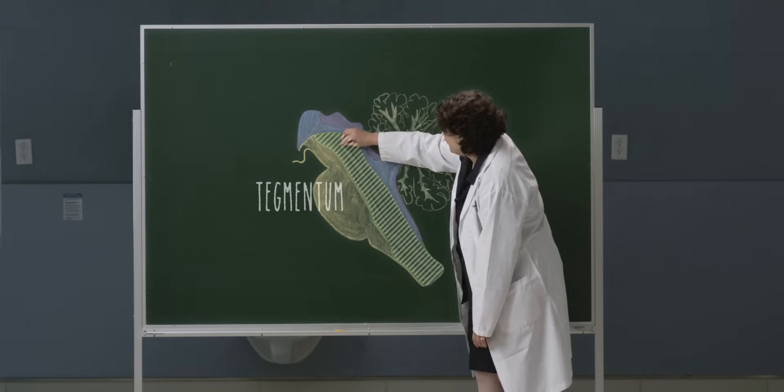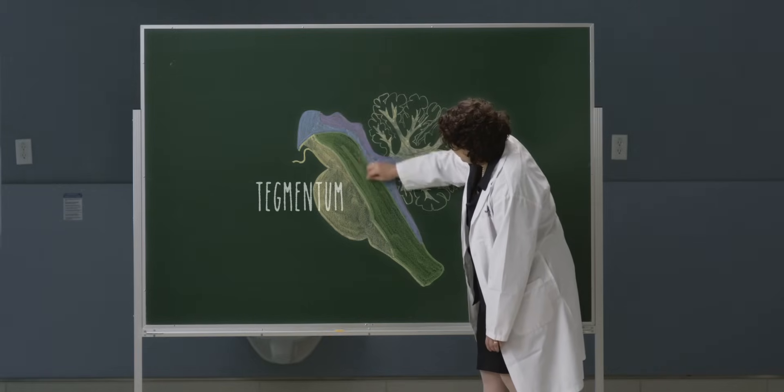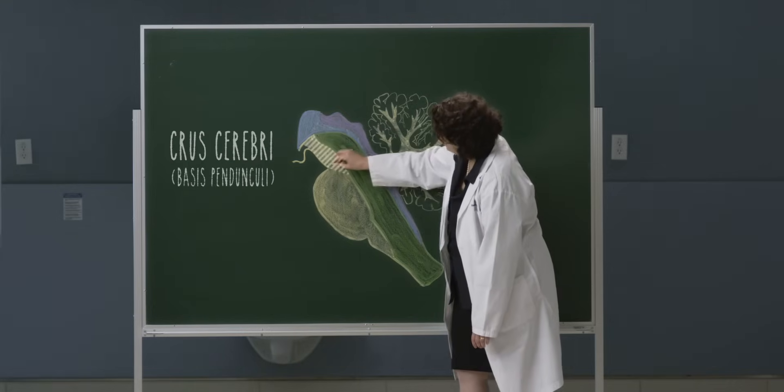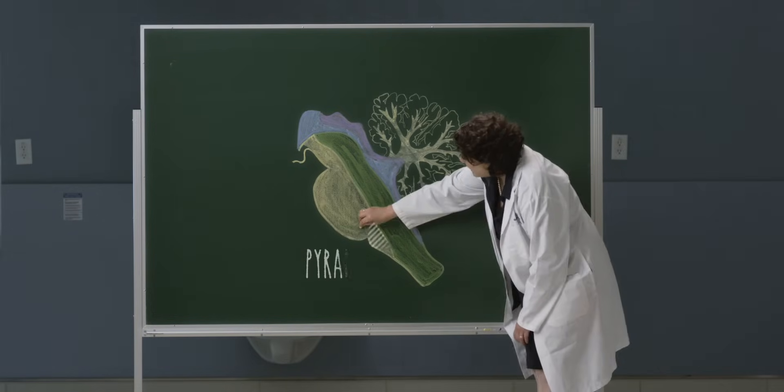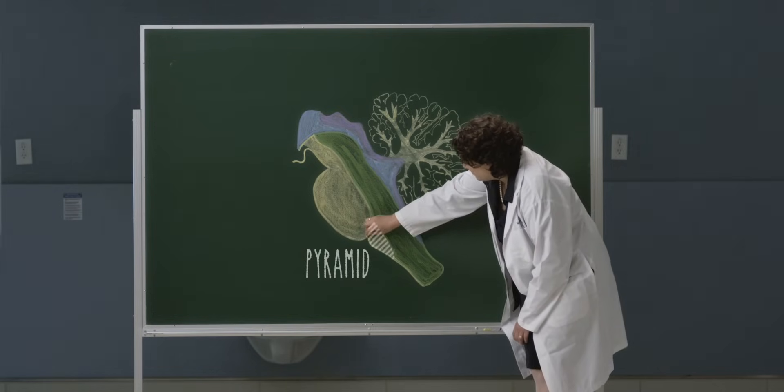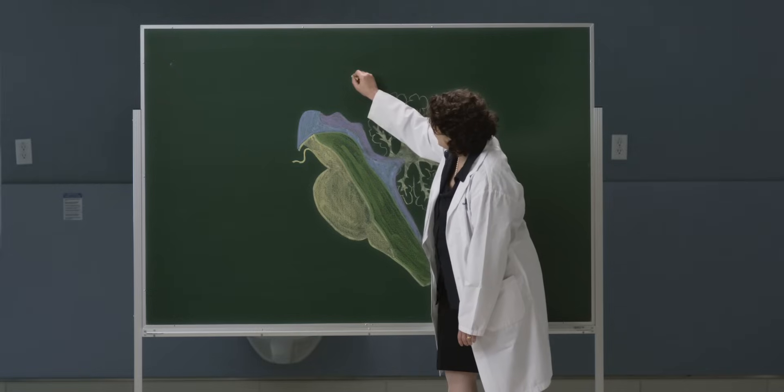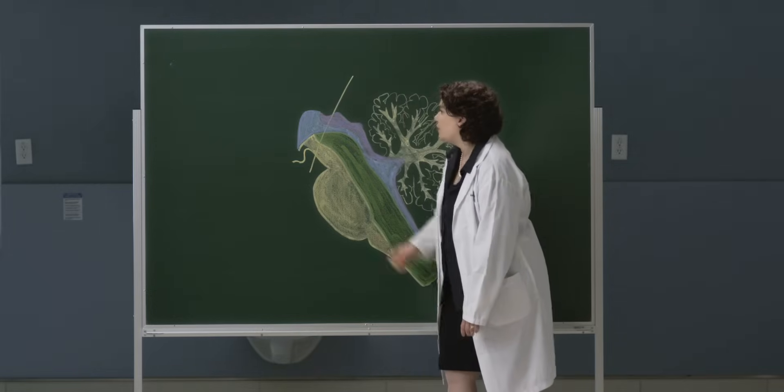Anterior to the ventricular system, making up the core of the brainstem, is the tegmentum. The descending motor fibers travel in the base of the brainstem — this comprises the cerebral peduncles in the midbrain, the base of the pons, and the base of the medulla. Now let's have a look at what a cross-section through the rostral midbrain at this level would look like.